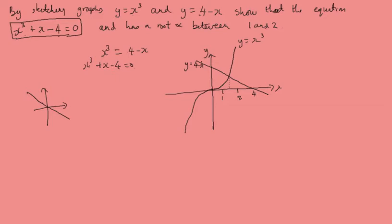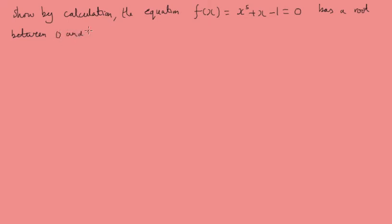Let's now look at an example where we use the change of sign method. So, show by calculation the equation f of x equals x to the power 5 plus x minus 1 equals 0 has a root between 0 and 1. When you see this bit here, it says by calculation and you've got some values that you want to explore. The first thing is to find out what the value of f of x is between those values.